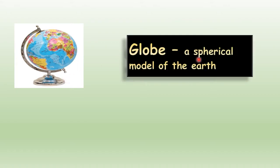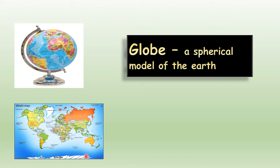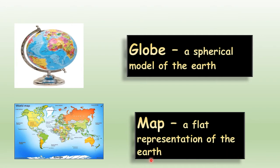To know all this in a better way, let's take help of globes and maps. This is a globe — a spherical model of the earth. It is a miniature of the earth and gives accurate information. A map is a flat representation of the earth. The map helps us know different places approximately, while the globe gives exact information as it is a miniature of the earth in spherical shape.